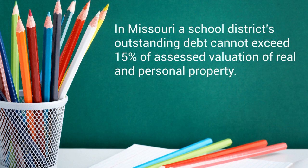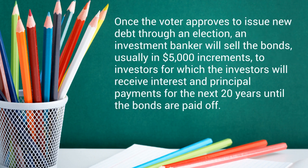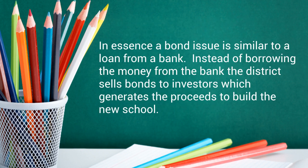In Missouri, a school district's outstanding debt cannot exceed 15% of the assessed valuation of real and personal property. Once the voters approve the issue of new debt through an election, an investment banker will sell the bonds, usually in $5,000 increments, to investors, who will receive interest and principal payments for the next 20 years until the bonds are paid off. In essence, a bond issue is similar to a loan from a bank — instead of borrowing money from a bank, the district sells bonds to investors, which generates the proceeds to build a new school.